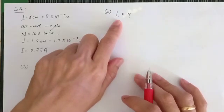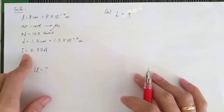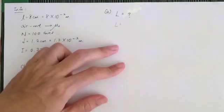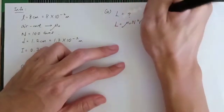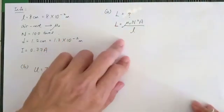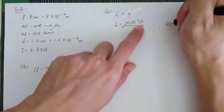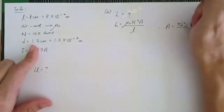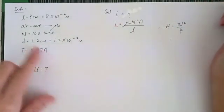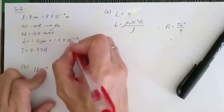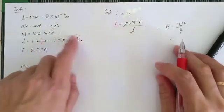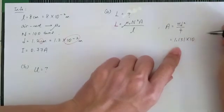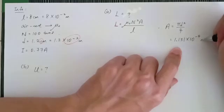To find L, the formula to use is L equals mu naught N squared A over l. Since the solenoid is circular, the area is that of a circle. We're given the diameter, so use A equals pi D squared over 4. Remember to convert centimeters to meters first — centimeter is times 10 to the negative 2. Substituting gives A equal to 1.131 times 10 to the negative 4 meter squared.